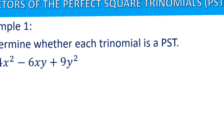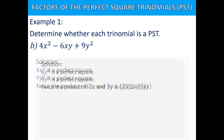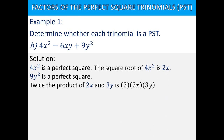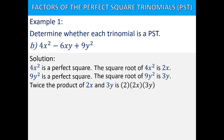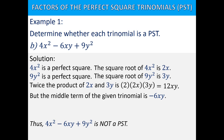Letter B: 4x squared minus 6xy plus 9y squared. The square root of 4x squared is 2x — yes, it is a perfect square. The square root of 9y squared is 3y. Twice the product of 2x and 3y is 2 times 2x times 3y, which equals 12xy. But the middle term of the given trinomial is negative 6xy. Thus, 4x squared minus 6xy plus 9y squared is not a perfect square trinomial.